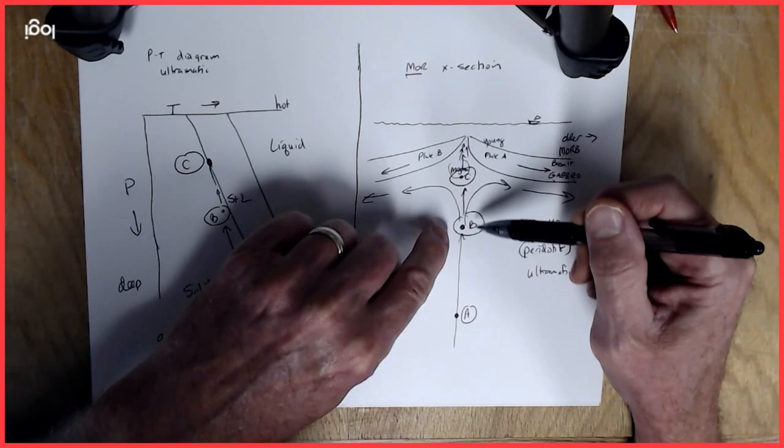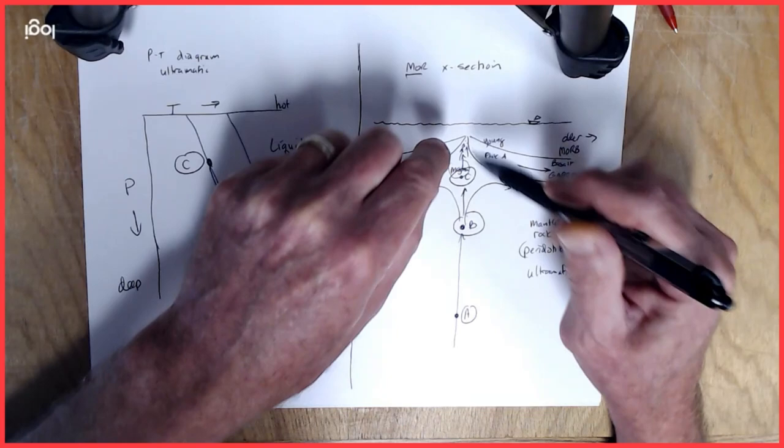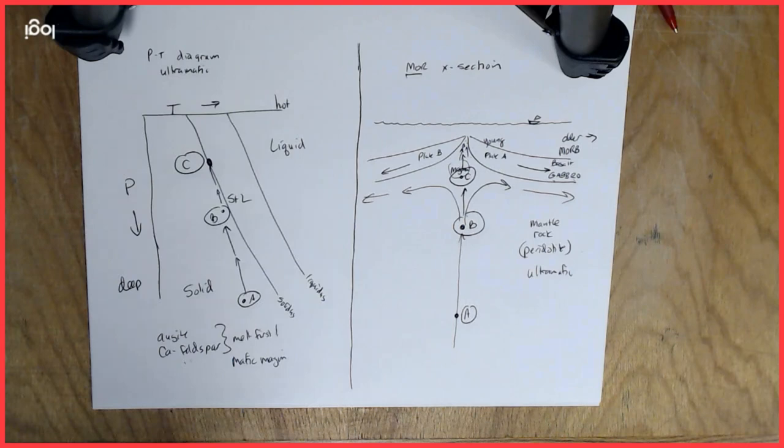But we'll get mafic rocks resulting from the crystallization of that. So this is an ongoing process. This just keeps happening. A little bit of melting, a little bit of magma working its way up, that magma cooling and crystallizing, pushing those plates out.